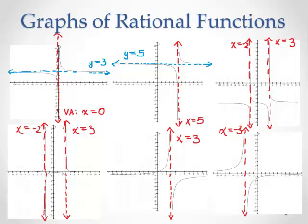The third top graph has a horizontal asymptote at y equals negative 5. An important note: horizontal asymptotes only indicate end behavior, not what happens in the middle. In this graph, the curve actually crosses the horizontal asymptote at y equals negative 5 somewhere in the middle — and that's perfectly okay. A graph can cross a horizontal asymptote, but it will never cross a vertical asymptote.